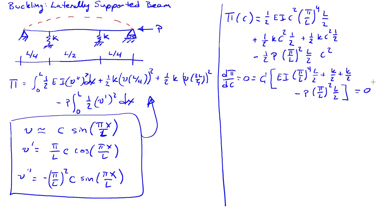We're looking for the condition on the load at which we can have a non-zero c. If I solve for p, I'll find that p is equal to pi squared e i over l squared, so the Euler load, plus 2 kl over pi squared. That's the modification due to the two lateral spring supports. So this gives me my critical load.